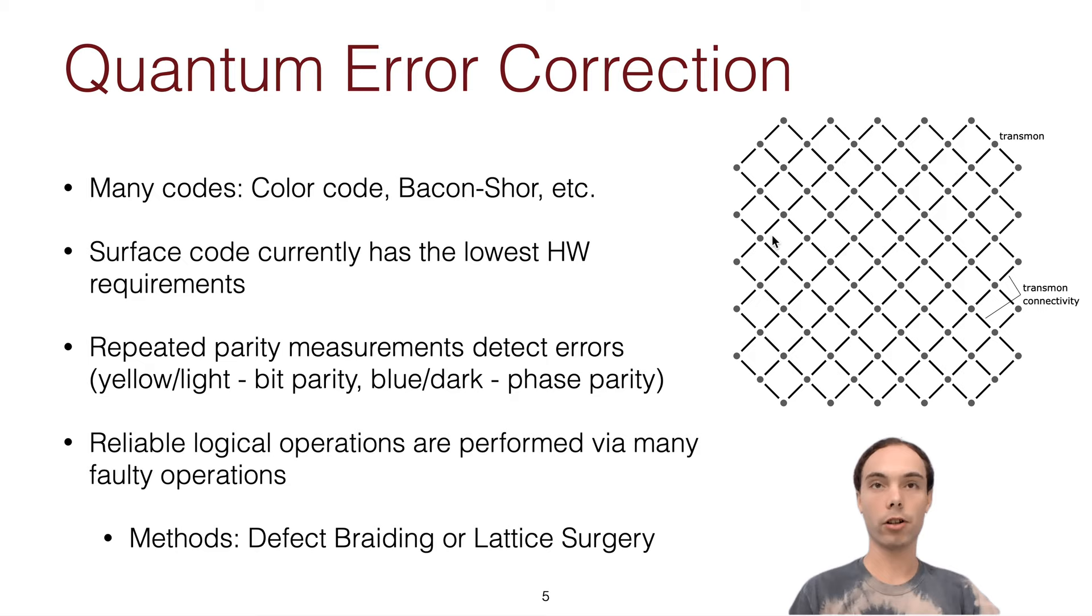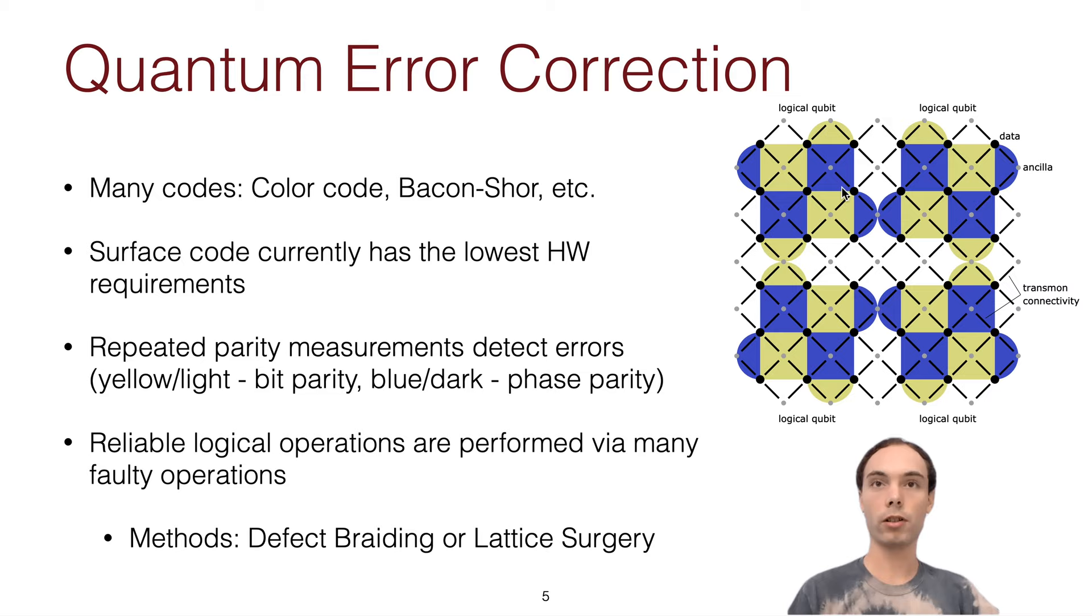So to do error correction, you do these parity checks shown in these colored boxes. And so nine of these data qubits shown here represent a single logical qubit. And so just as an aside, there's two types of parity checks, phase and bit flip parity checks. In classical computing, you'd only have to check for bit flip errors. But this is 2D because each dimension checks for one of those error types.